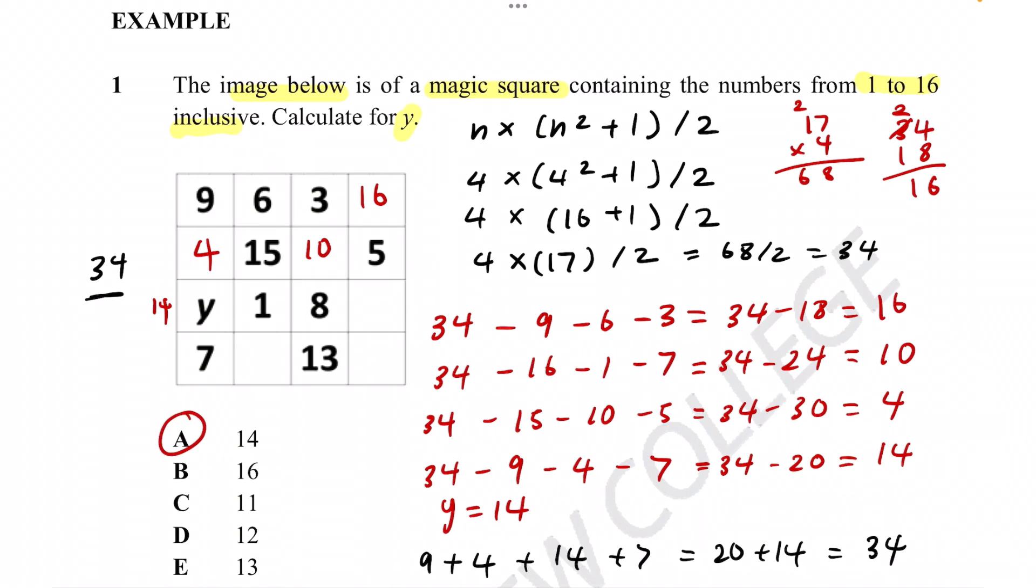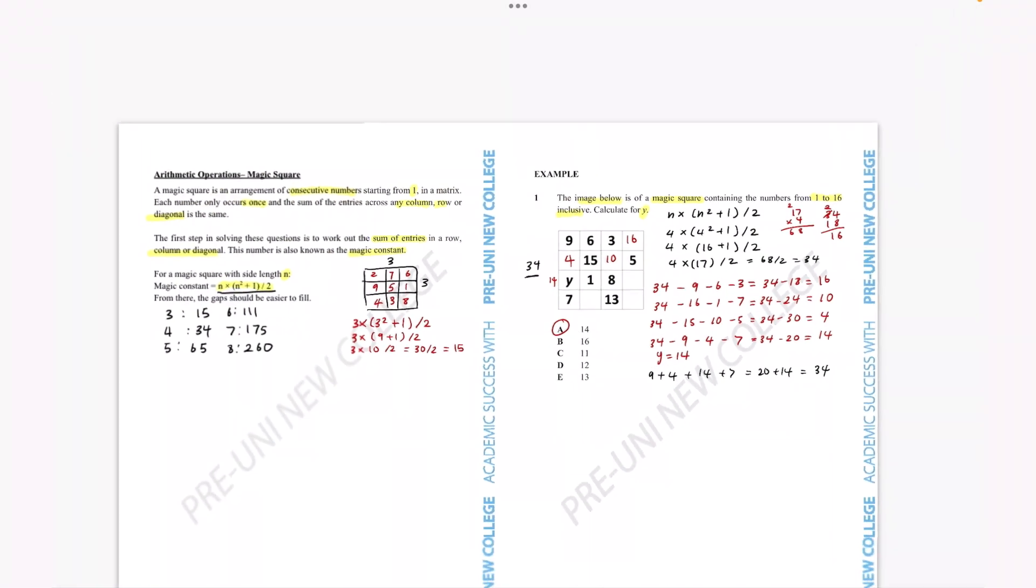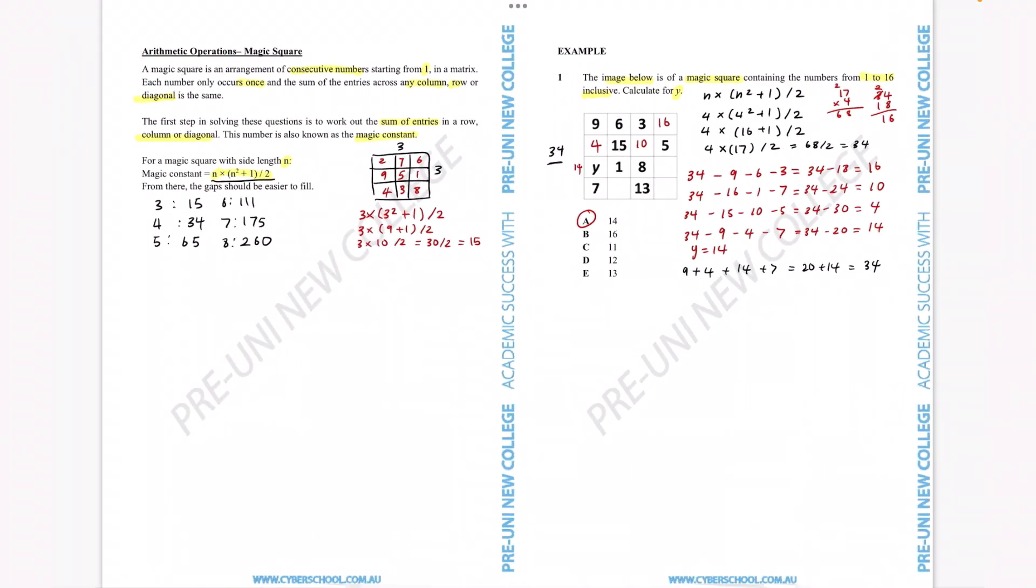So that's how you would do a magic square kind of question. The most important thing is to remember this formula so you can always know the constant and the rest of it should be quite easy. I hope you finally know how to solve magic square questions and good luck for any future questions involving magic squares. Bye!